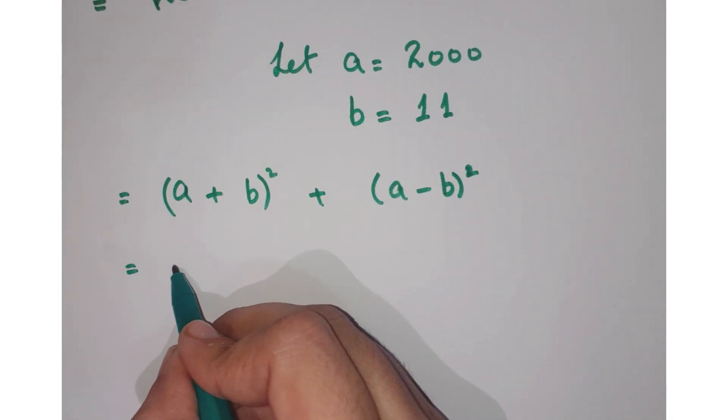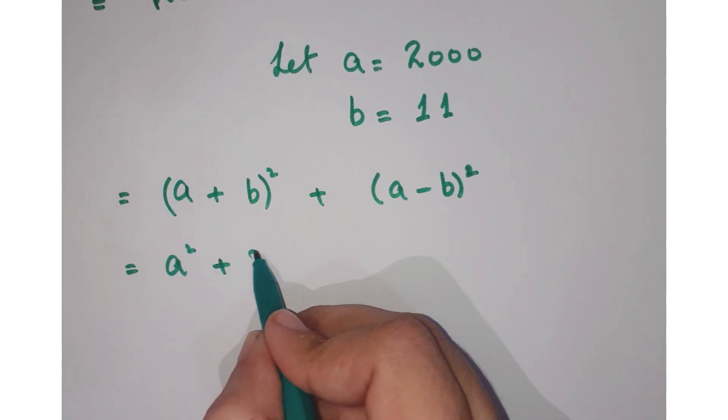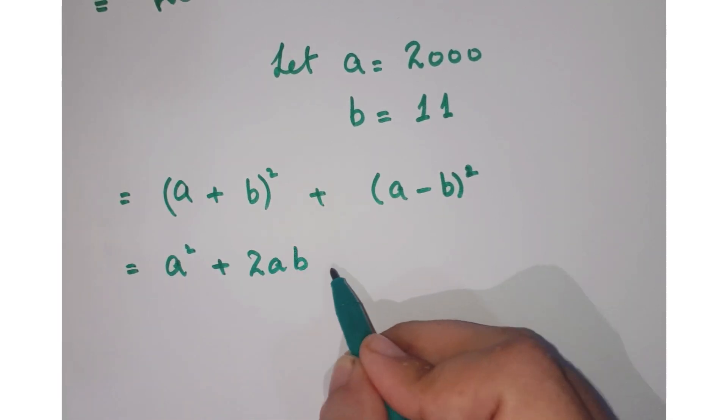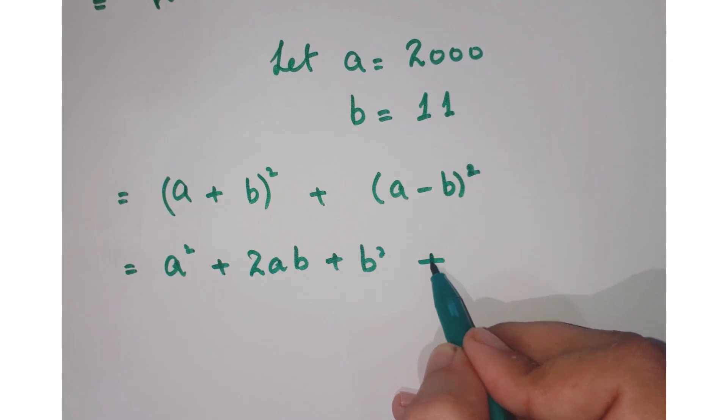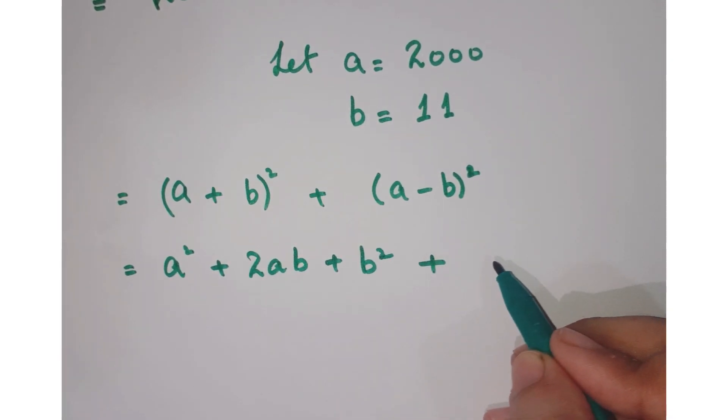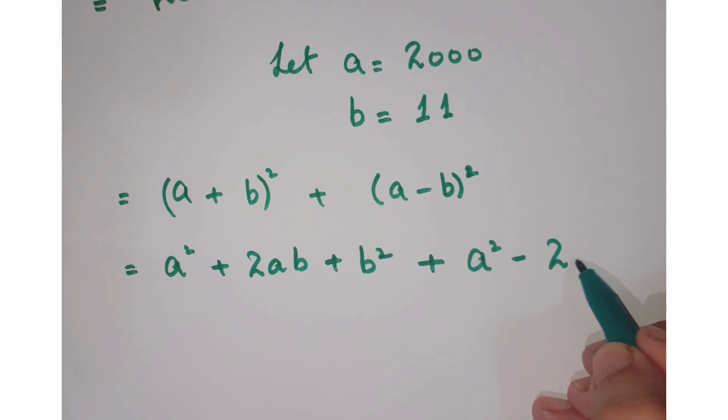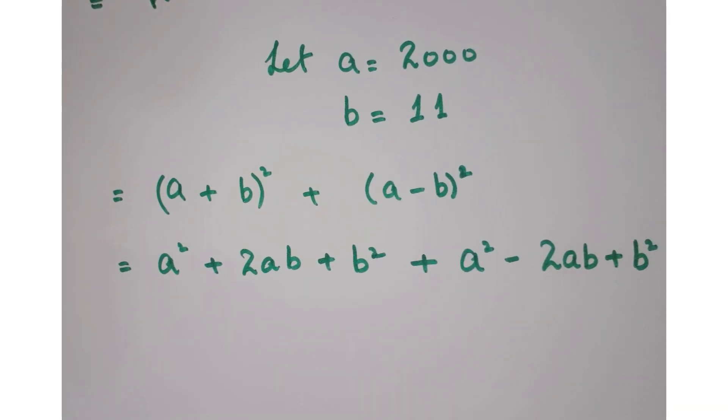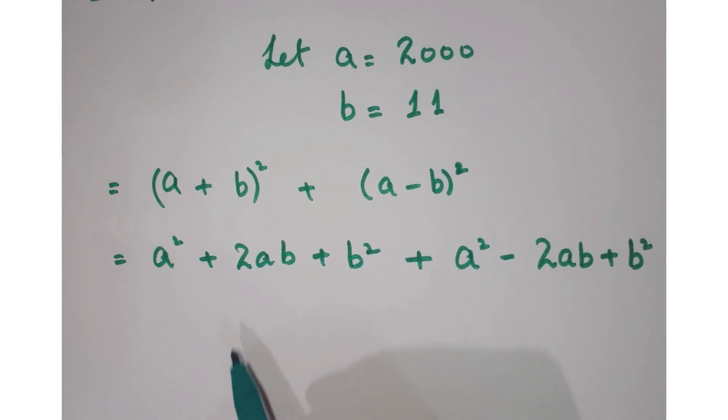Here a plus b can be expanded as a square plus 2ab plus b square, and this a minus b whole square can be written as a square minus 2ab plus b square.